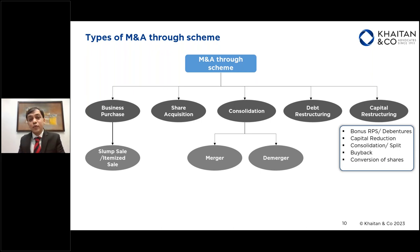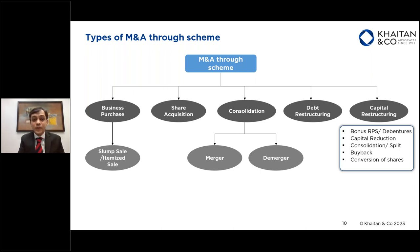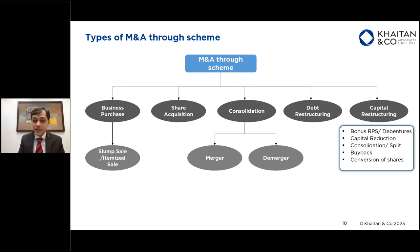Doing a business transfer through a scheme helps you transfer those approvals and licenses smoothly. You don't need to execute different contracts or agreements for transferring assets like contracts or immovable properties — they can be transferred by virtue of a court order. In certain states there is also lower stamp duty payable if there are substantial immovable properties changing hands. There are many precedents where companies have done a business transfer through a scheme of arrangement.